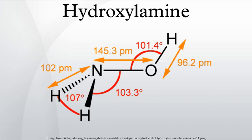Hydroxylamine was first prepared as hydroxylamine hydrochloride in 1865 by the German chemist Wilhelm Clemens Lossen. He reacted tin and hydrochloric acid in the presence of ethyl nitrate. It was first prepared in pure form in 1891 by the Dutch chemist L'Aubry de Brienne and by the French chemist Maurice Chrisma.